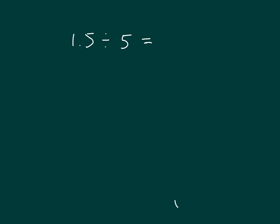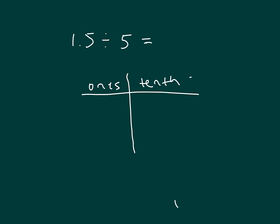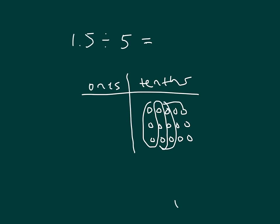Here we're asked for 1.5 — 1 and 5 tenths — divided by 5. It would help to rename this all as tenths. I have ones and I have tenths, so I would have 15 tenths divided by 5. 5, 10, 15 tenths divided by 5 gives me 3 in each of those groups, so I have 3 tenths.